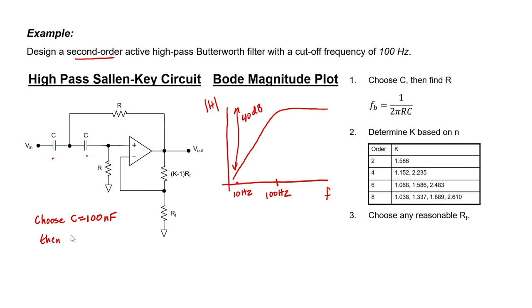then we're going to end up with a resistor R of 15.92 kOhms. And of course, we can round that to 15.8 kOhms in order to be able to find a standard resistor value.